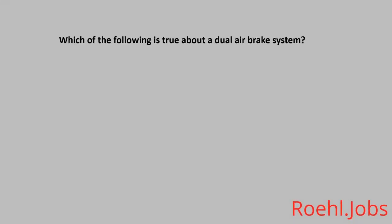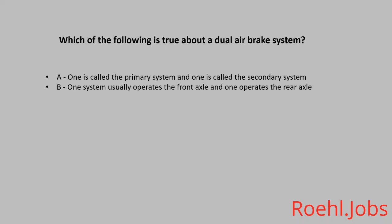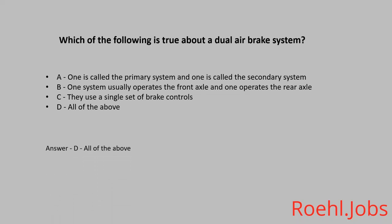Which of the following is true about a dual air brake system? A. One is called the primary system and one is called the secondary system. B. One system usually operates the front axle and one operates the rear axle. C. They use a single set of brake controls. D. All of the above. The answer: D. All of the above.